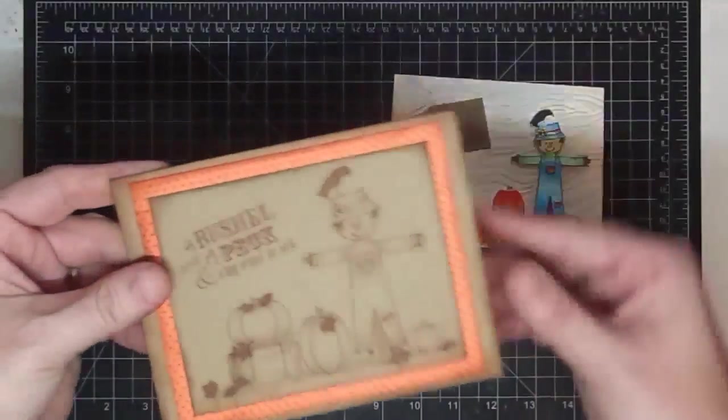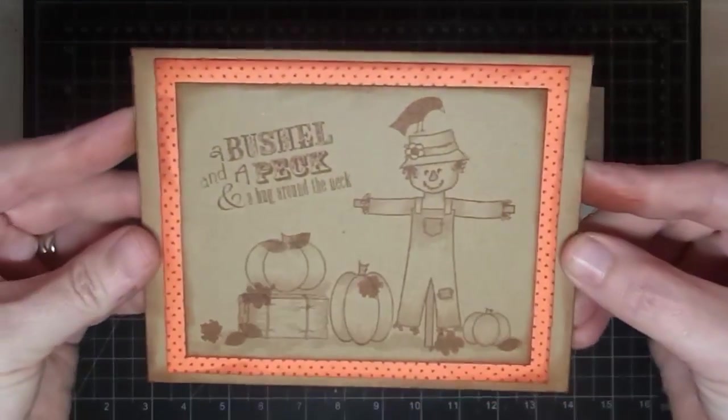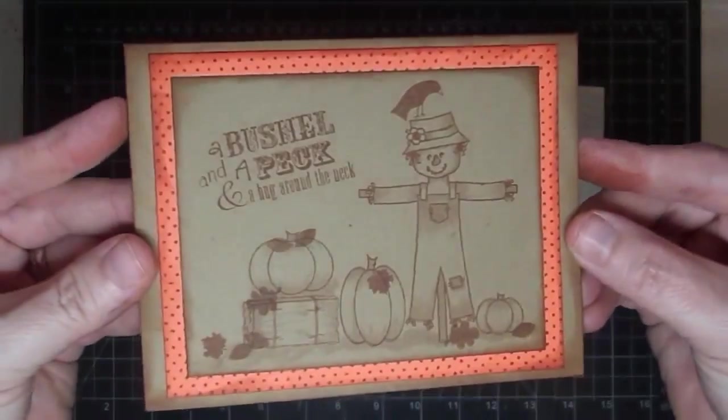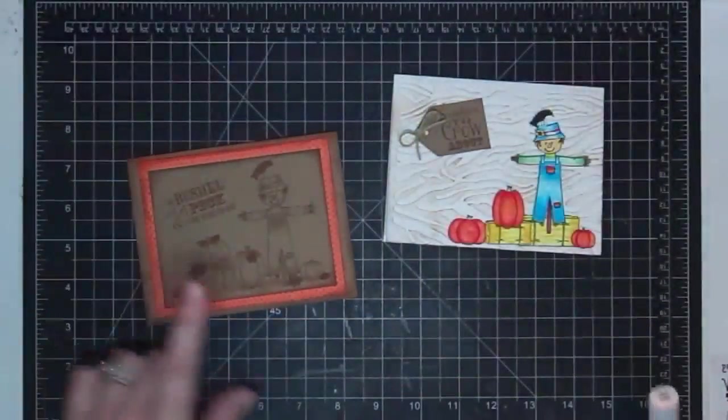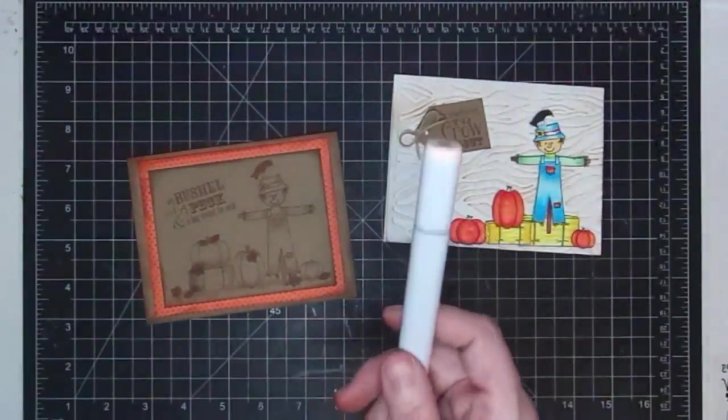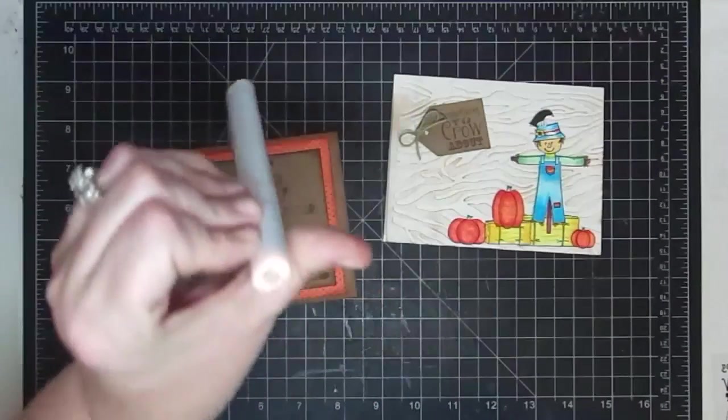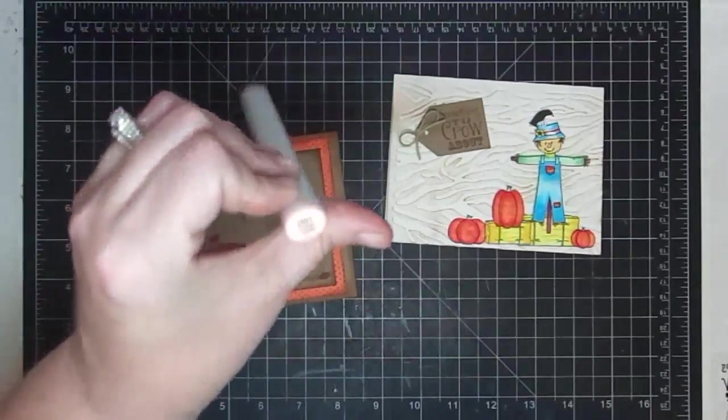But look at this guy. Do you see the shading in there and the coloring? And it's kind of sepia looking. I'm going to show you today how to do this with one Copic marker. And the color of this one is Pinkish Vanilla, RO1.